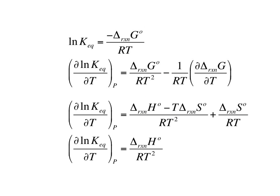So making those substitutions, we can see that the delta S terms are going to cancel, and we end up with the derivative of the natural log of the equilibrium constant with respect to temperature is equal to the delta H of reaction divided by RT squared.